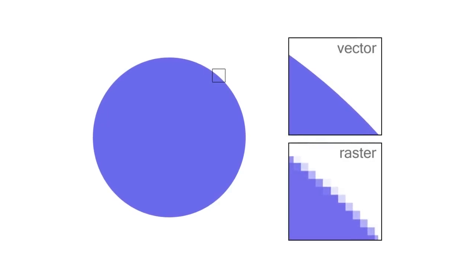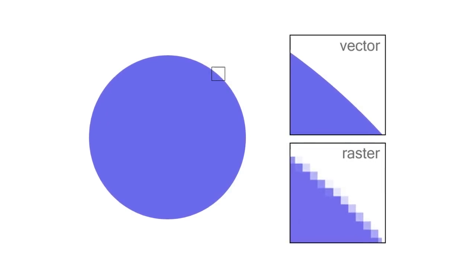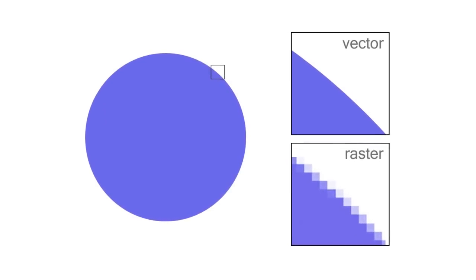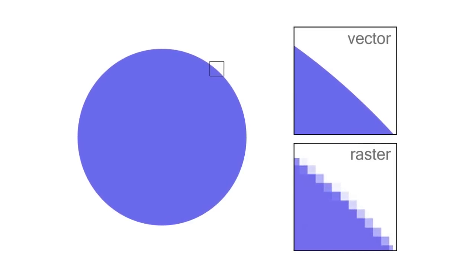Basically, the short answer is both. But before getting into detail, you first need to understand the difference between raster and vector images. Vector images are images that you can scale as big as many times as you want and they'll remain high quality, because they're not based on pixels.